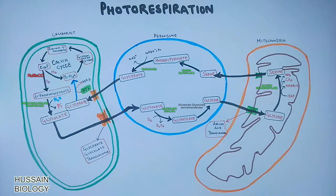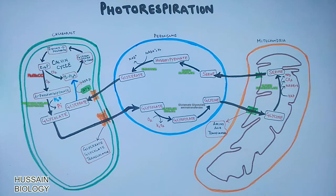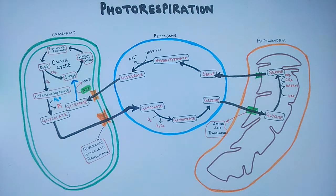To avoid photorespiration, some plants have adapted a mechanism called C4 metabolism, where the rubisco enzyme does not interact with oxygen at all. This way, only carbon dioxide interacts with rubisco, which normally leads to the Calvin cycle. C4 metabolism will be discussed in another part of the video.